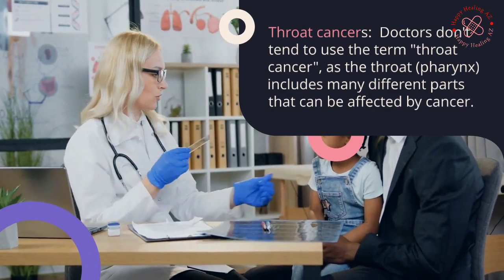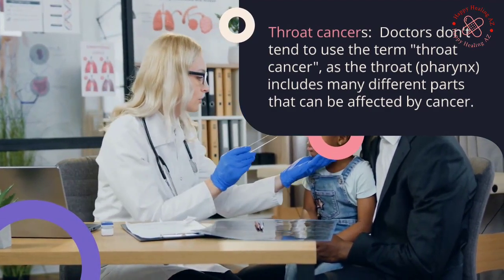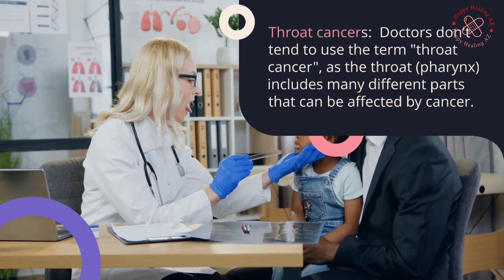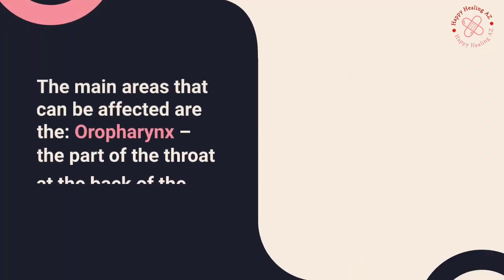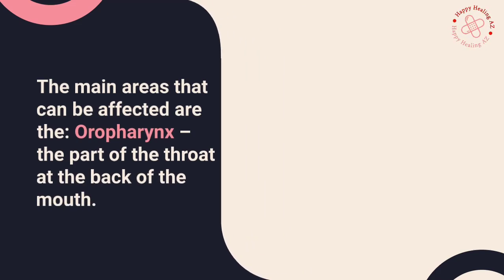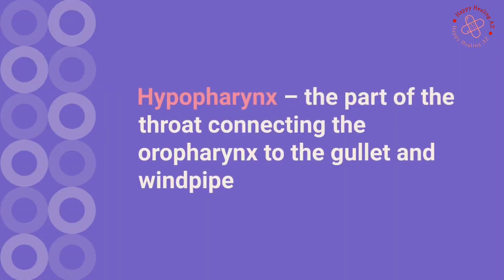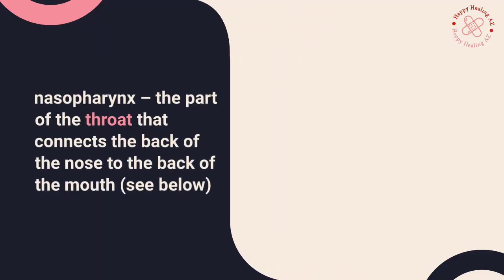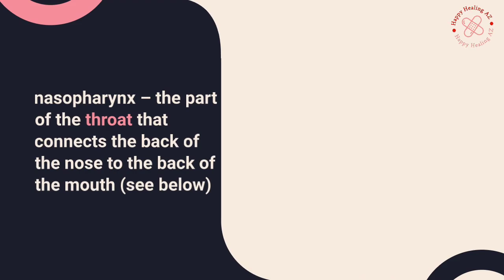Throat cancers: doctors don't tend to use the term 'throat cancer' as the throat (pharynx) includes many different parts that can be affected by cancer. The main areas that can be affected are the oropharynx — the part of the throat at the back of the mouth — the hypopharynx — the part of the throat connecting the oropharynx to the gullet and windpipe — and the nasopharynx — the part of the throat that connects the back of the nose to the back of the mouth.